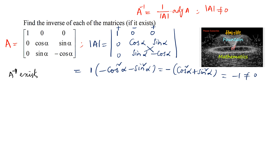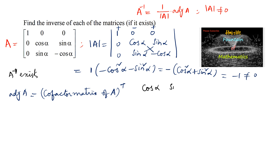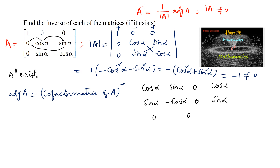Now let us find the adjoint of the matrix. Adjoint of A is equal to the cofactor matrix of A, whole transpose. Using the shortcut, we write the cofactors starting from the second row, second column: cosα, sinα, then 0, and cosα in cyclic order. Similarly, the next row: sinα, -cosα, and 0, sinα. For the first row: 1, 0, 0, and back to cosα, sinα, 0, cosα.